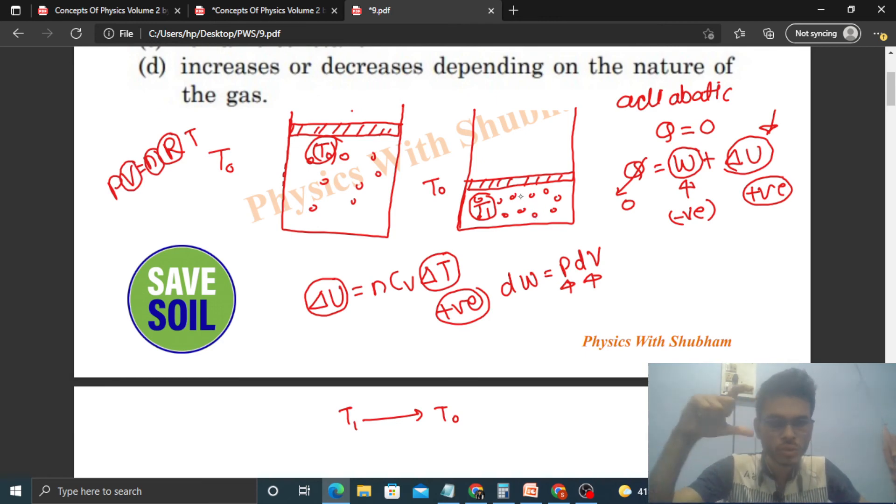Now R is constant, the number of moles of the gas in the cylinder is also constant. The volume will also become constant of this gas, because when you push the piston, right, after that you maintain that piston at that same position, so the volume of the gas is also constant.